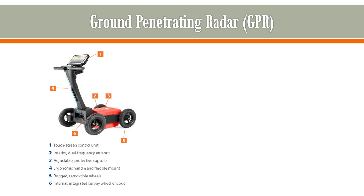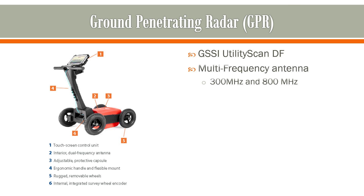What we use at Pyramid is what's called a utility scan DF radar instrument. It's made by GSSI, and it is beneficial for this type of work because it is a multi-frequency instrument. It has two different frequency antennas built into it, which allows us to collect very high resolution data in the shallow subsurface — the upper two feet or so — as well as deeper, down to 10, 12, even 15 feet depending on the geology.